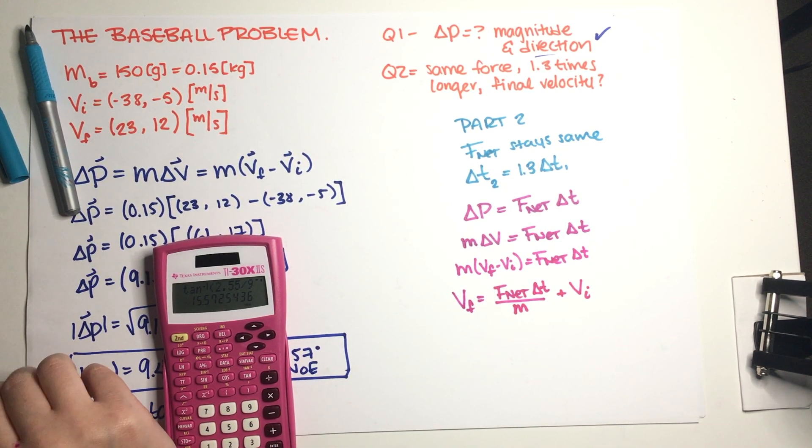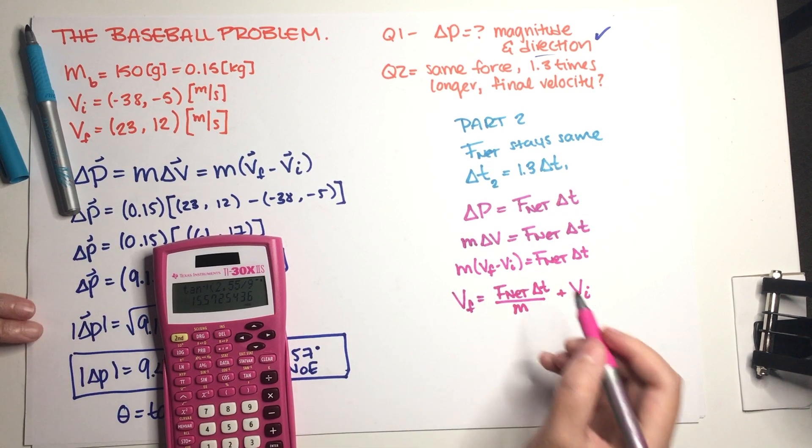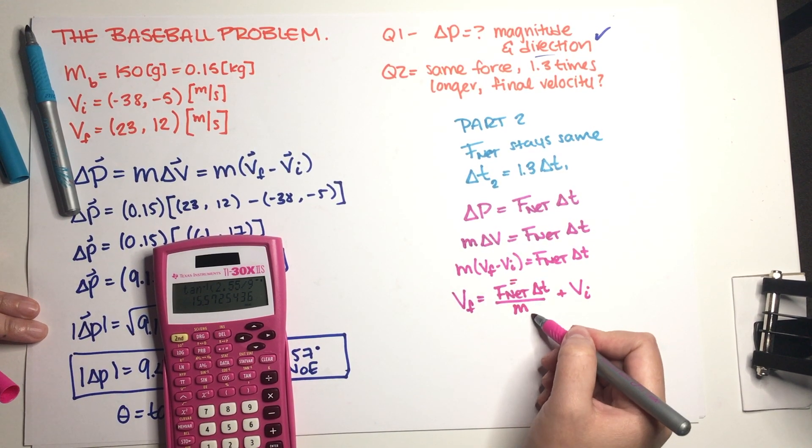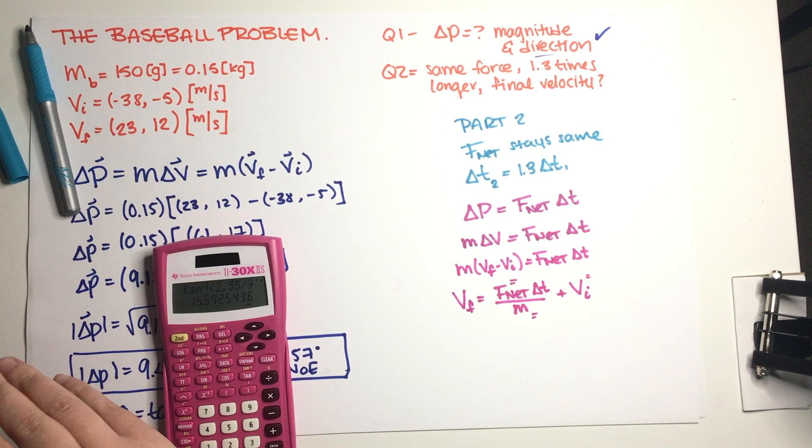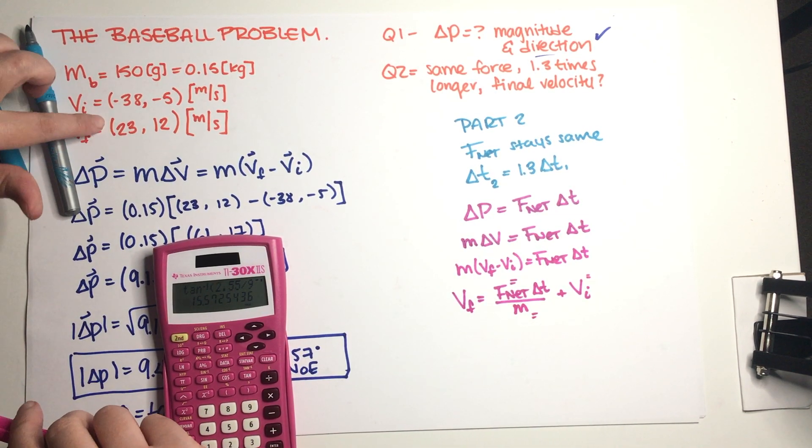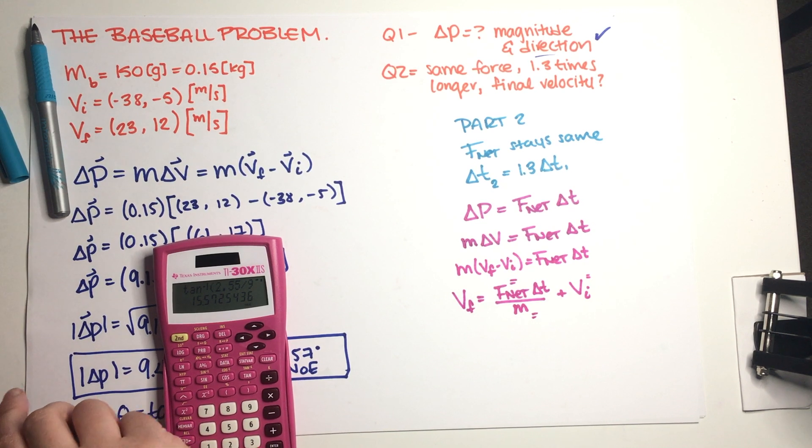Okay, so this is everything that we need essentially in order to solve this problem. F_net is going to stay exactly the same, the mass is going to stay exactly the same, our initial velocity was exactly the same. We actually have a number, we actually have the number over here.